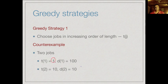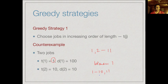If we pick the shortest job first, we incur a lateness of 1 because we go from 0 to 1, then from 1 to 11, so the second job finishes one unit of time late. On the other hand, if we do the 10-unit job first (1 to 10) then the 1-unit job (10 to 11), we get lateness 0. So picking the shortest job first doesn't give us the best answer.